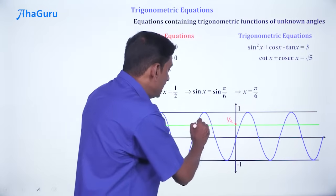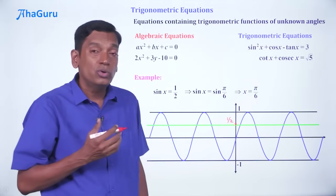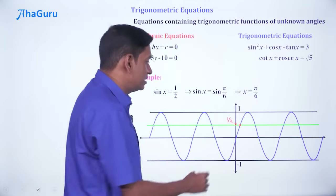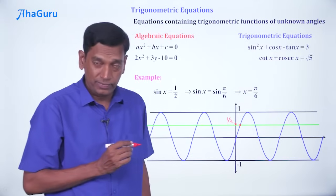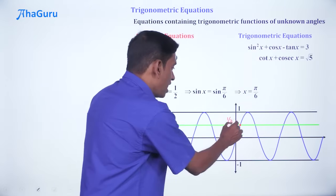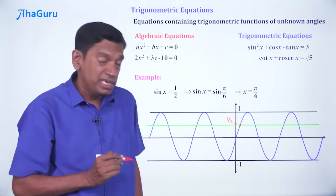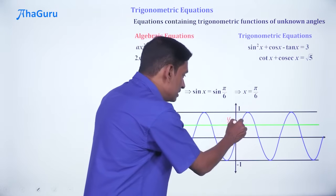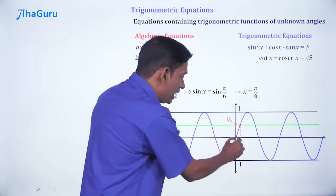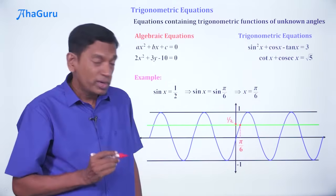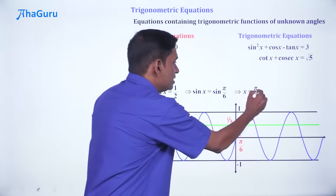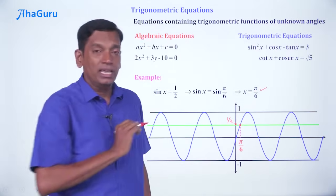Now this is the intersection is what we are trying to find. Now we can clearly see that this point is a common point for this 1/2 and sin x. That means if you plot this thing, this is going to be at π/6. So that means our answer is correct. x = π/6 is correct.